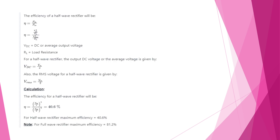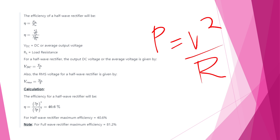Now let's see how we get that. The efficiency of a half-wave rectifier is DC power divided by AC power: V²DC/RL divided by V²RMS/RL. DC is the average output voltage, and RL is the load resistance. This is the half-wave rectifier case.